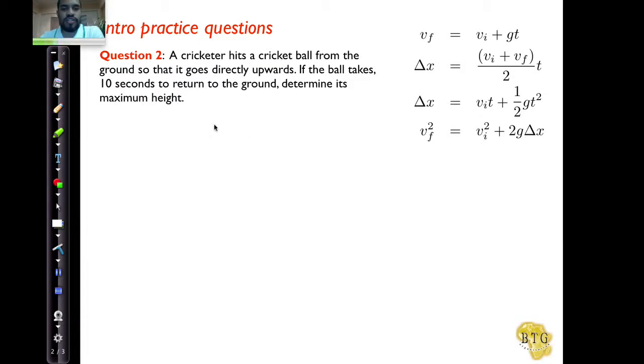Okay, so the next intro practice question. We're saying a cricketer hits a cricket ball from the ground so that it goes directly upwards. If the ball takes 10 seconds to return to the ground, determine its maximum height.